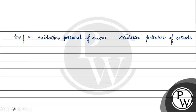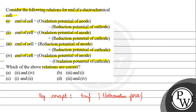Coming back to the question. First statement: oxidation potential of anode minus reduction potential of cathode. If we had two pluses the answer would be correct, but we have two minuses — so this is wrong. Second statement: EMF equals oxidation potential of anode plus reduction potential of cathode. Yes, this statement is correct. Third statement: EMF equals reduction potential of anode plus reduction potential of cathode. Reduction potential of cathode is positive, but reduction potential of anode carries a negative sign because the anode undergoes oxidation.